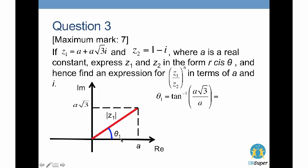Now let's find the modulus-argument form of z1. On the Argand diagram, z1 equals a plus a√3·i. The real value a is placed on the horizontal axis, and a√3 is the imaginary value placed on the vertical axis. We need to find the argument — the angle made by the red line and the horizontal axis.